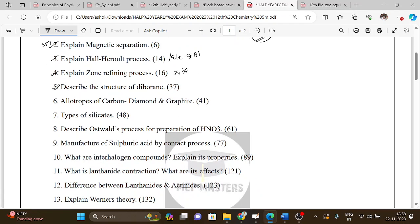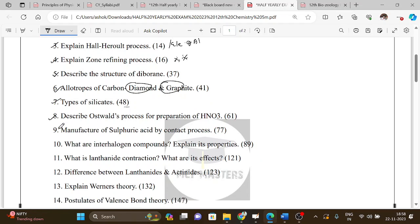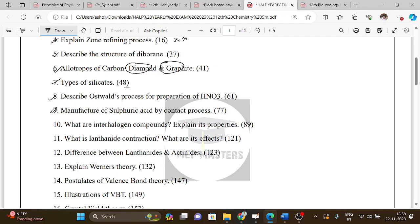Describe the structure of diboron. Allotropes of carbon, especially diamond and graphite. Types of silicates, that is important. Then describe Ostwald's process for preparation of nitric acid, HNO3. Then manufacture of sulfuric acid by contact process.